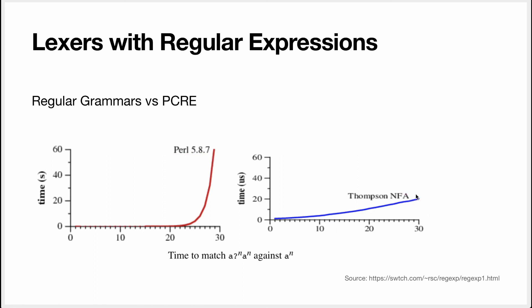Whereas if you use this approach, which is a different way to implement the automaton, and we'll talk about this in the next video, then it only increases linearly. And you'll notice that the timescale is not the same. This is microseconds, and this is seconds. So this is actually not worse here. It's just a different scale, so it's always better.